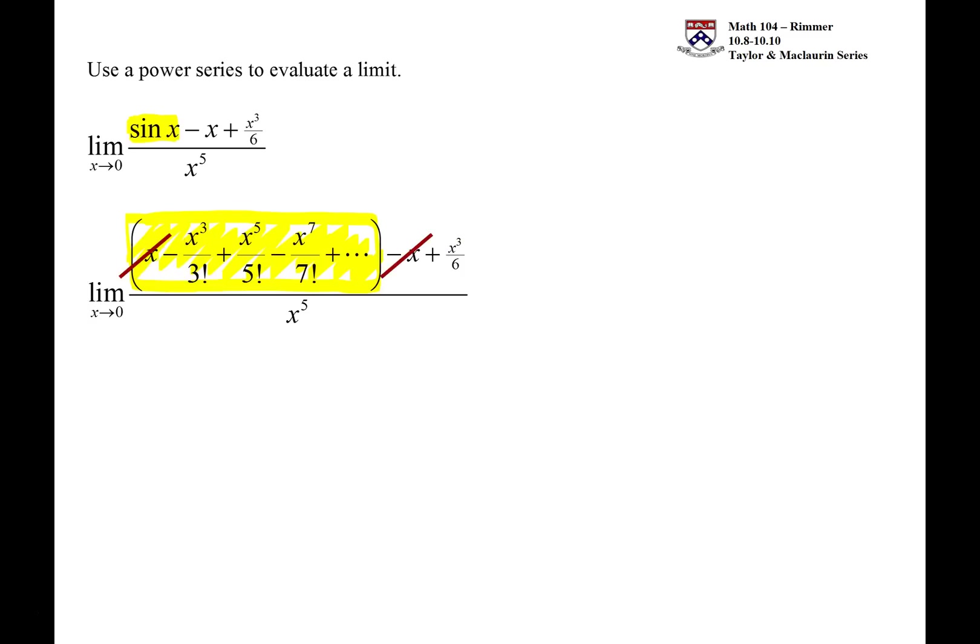We have the x from the sine of x and the x from the part that's after that, and those two parts will cancel. And then with the x cubed, we have x cubed over 6—3 factorial is 6 with a negative on it, and there it is with a plus.